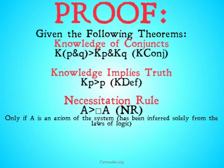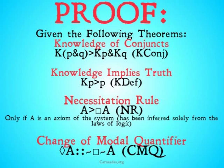We're also going to be using a couple of rules from modal logic. This is going to be the necessitation rule: if A is an axiom in our system, it implies that it's necessary that A. Basically, all the laws of logic are necessary if they're true. We're allowed to use this only if whatever premise has been inferred solely from the laws of logic. And change of modal quantifier — this is just our change of quantifier but with modal operators instead of the universal and existential quantifiers.